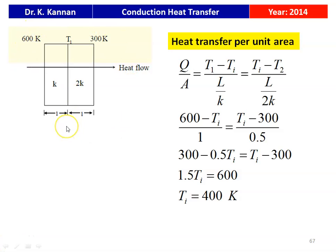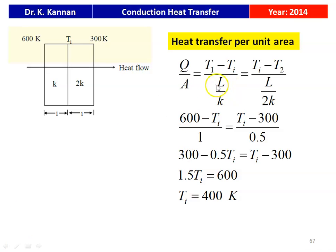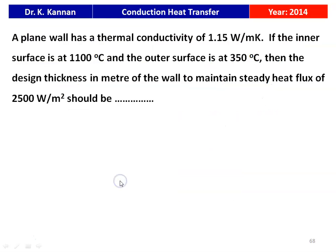For the composite slab, heat transfer rate per unit area Q/A: (T₁ − T_i)/(L/K) = (T_i − T₂)/(L/2K). Substituting numerically: (600 − T_i)/1 = (T_i − 300)/0.5. Cross-multiplying: 0.5 × (600 − T_i) = T_i − 300, giving 300 − 0.5T_i = T_i − 300. Therefore 1.5T_i = 600, so T_i = 400 Kelvin. This is the answer.